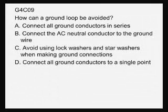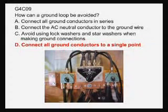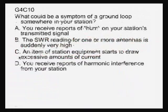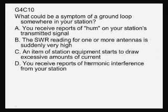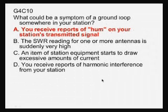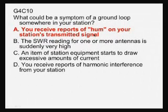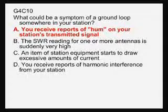How can a ground loop be avoided? Connecting all the ground conductors to a single point is how you avoid a ground loop, as shown in the same picture with all ground connections coming to a single point. What could be a symptom of a ground loop? If you receive reports of hum or distortion on your station's transmitted signal, that could indicate you have an ineffective ground causing problems with your transmitted signal.